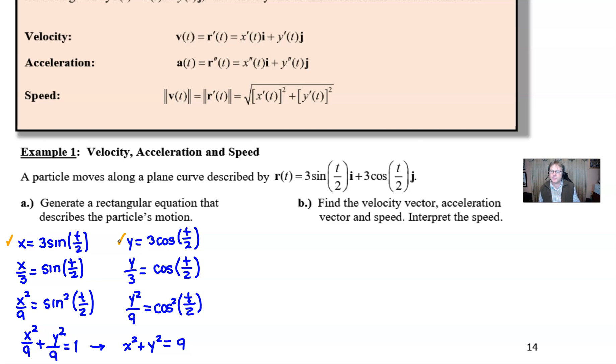Now if we move on to part b, this is where more of the calculus comes into play. Find the velocity vector, the acceleration vector, and the speed, and interpret the speed. What we're going to do is find our velocity - and it is a vector - by simply taking the derivative of our position vector. The derivative of 3sin(t/2) with respect to t: we're still going to have a 3, the sine turns into cosine of t/2, but then the chain rule applies. The derivative of t/2 is a half, and that half would be multiplied by the 3, so we would actually have 3/2 in front with our i.